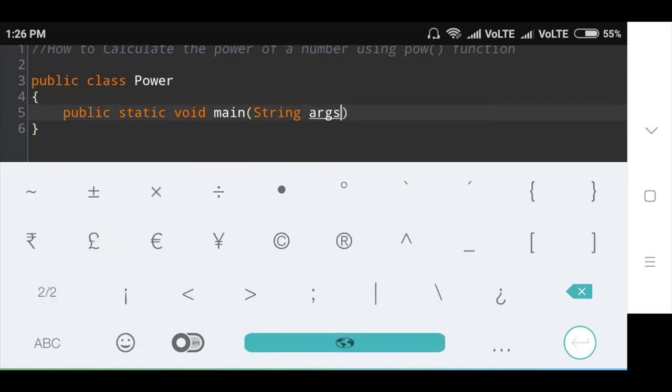Here, public is an access specifier which allows the main method to be accessible everywhere. Then static helps the main method to get loaded without getting held by any instance or object.